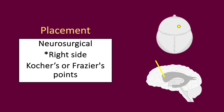There are multiple described insertion sites for EVD catheters. An example is Kocher's point, approximately 10 centimetres posterior to the nasal bridge and 3 centimetres to the right or left of the midline, or the Frazier point, which is a parieto-occipital approach. The sterile catheter is placed through the skull, dura and brain parenchyma into the lateral ventricle, ideally to the foramen of Monroe — the intraventricular foramen.